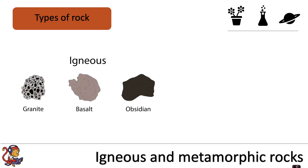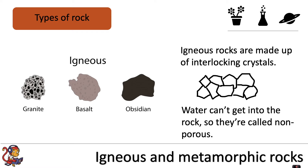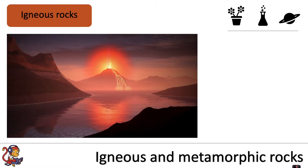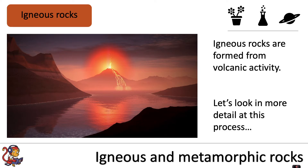Examples of igneous rock include granite, basalt, and obsidian. Igneous rocks are made up of interlocking crystals. Water can't get into the rock, so they're called non-porous. Igneous rocks are formed from volcanic activity.